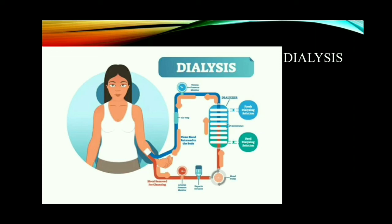Do you know the first kidney transplant was performed by Joseph E. Murray and his colleagues at Peter Bent Brigham Hospital in Boston in the year 1954? They performed the first successful kidney transplantation between Ronald and Richard Herrick, who were identical twins. The recipient, Richard Herrick, died after eight years of transplantation.